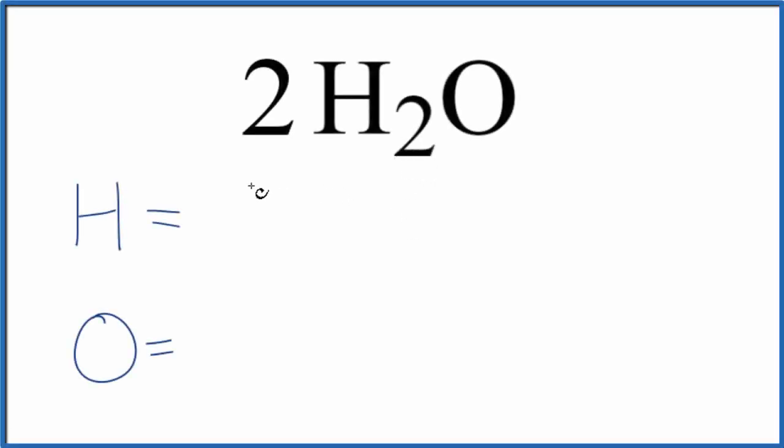Let's figure out how many atoms we have in 2H₂O. So really what this means, this two is called a coefficient, and what it means is we have two water molecules. So we have two H₂O molecules.